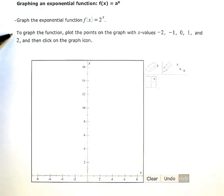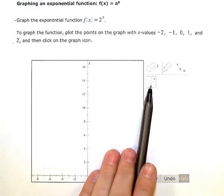To graph the function, plot the points on the graph with x values negative 2, negative 1, 0, 1, and 2, and then click on the graph icon. When you do this problem on ALEKS, you're going to have to use this plot point tool to put some points on our graph.